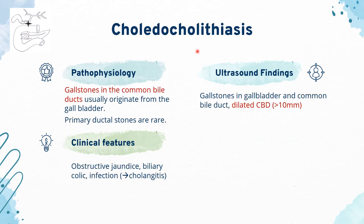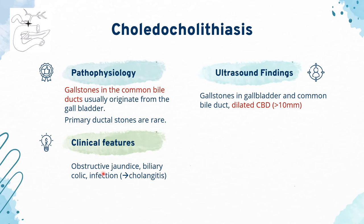In choledocholithiasis, gallstones are found in the common bile duct and usually originate from the gallbladder; primary duct stones are rare. Clinical features include obstructive jaundice and biliary colic, and if infection occurs, complications such as acute cholangitis develop. Ultrasound typically reveals gallstones in the gallbladder and common bile duct, which will be dilated at more than 10 mm. Small stones less than 5 mm commonly pass unnoticed, but larger stones may impact the CBD or ampulla of Vater, causing complications. Alkaline phosphatase and gamma-glutamyl transferase levels are elevated in post-hepatic obstructive jaundice.